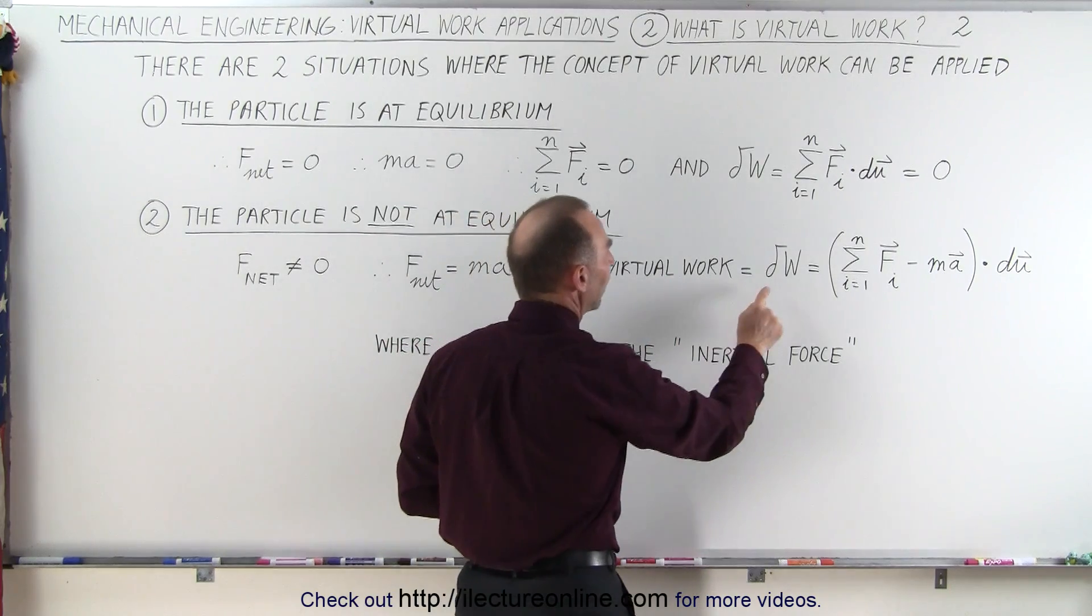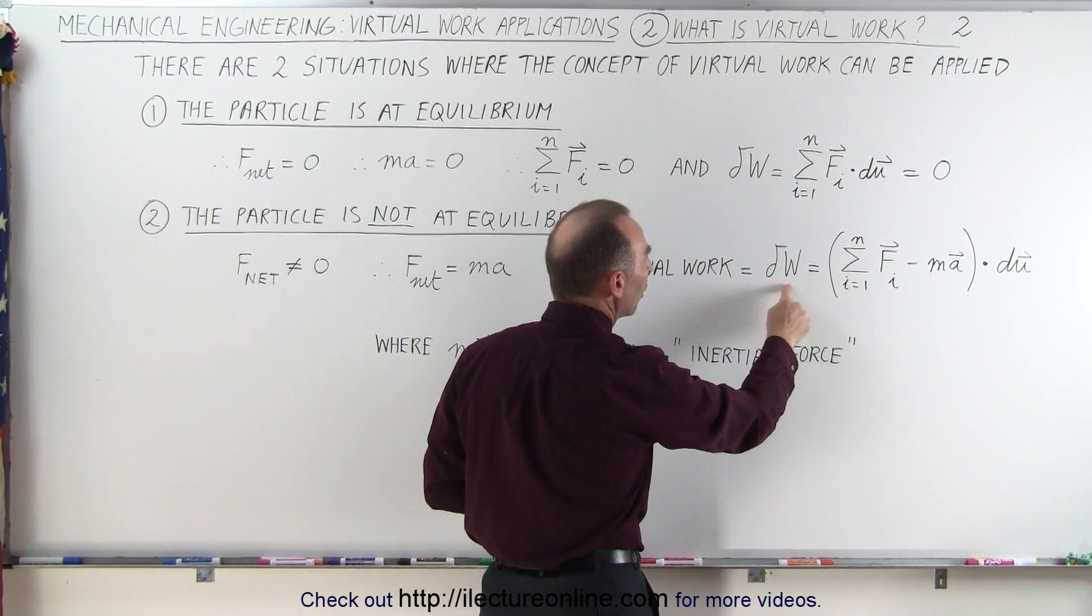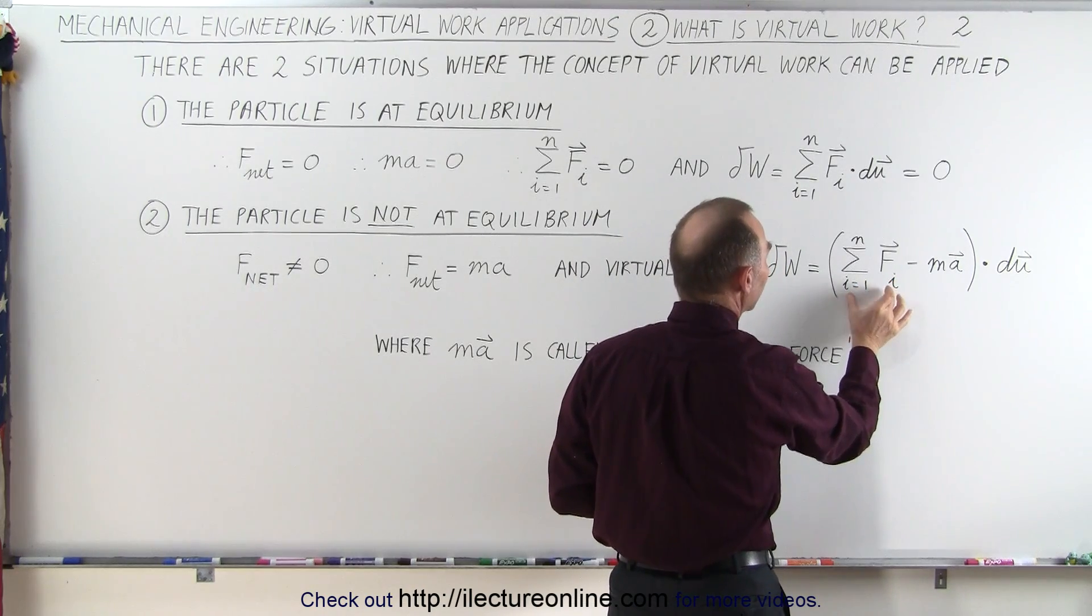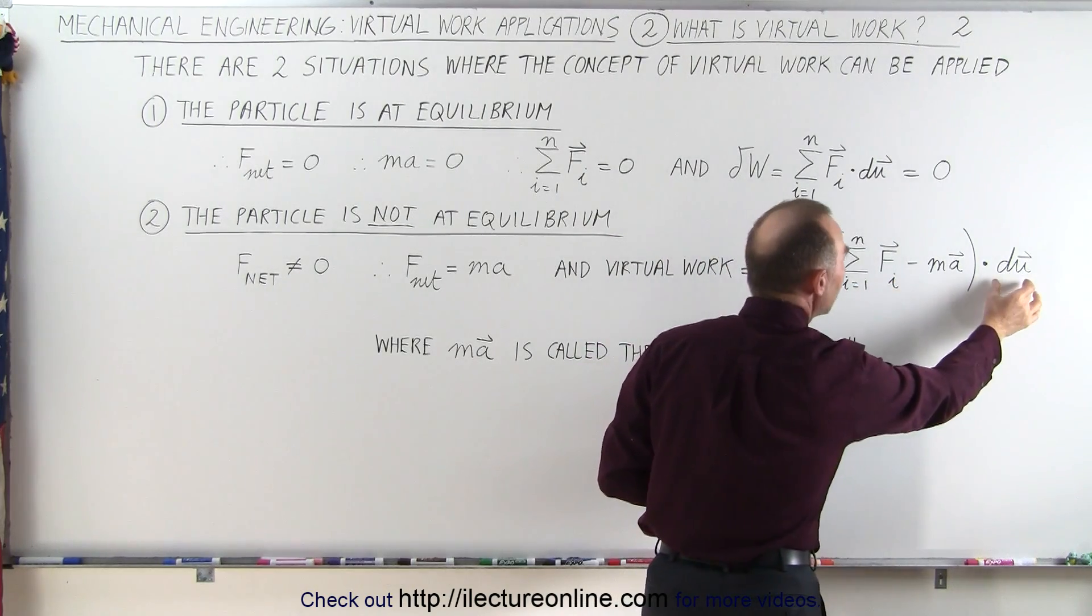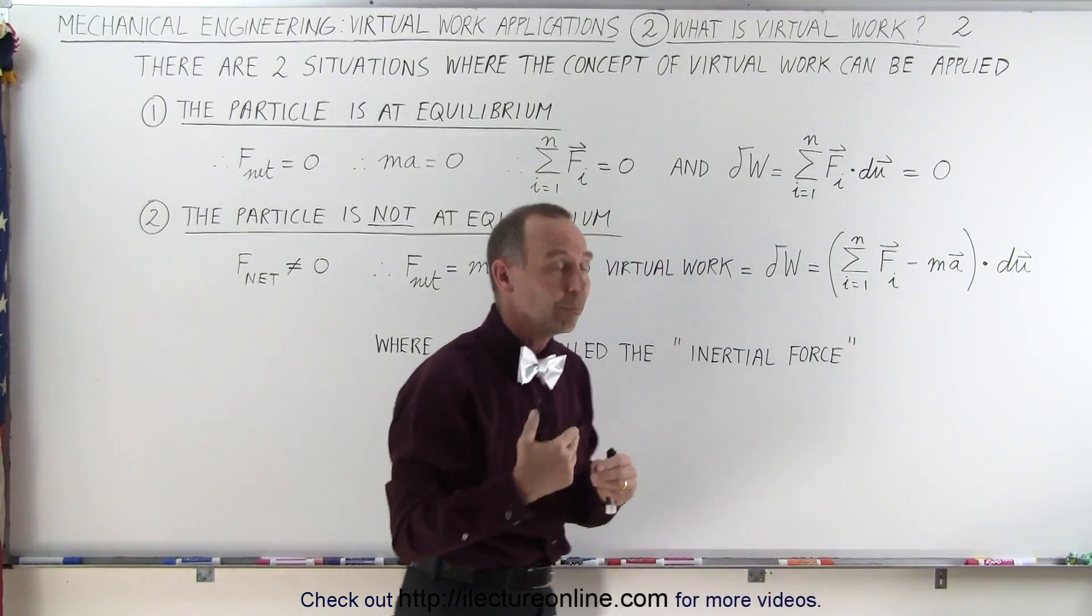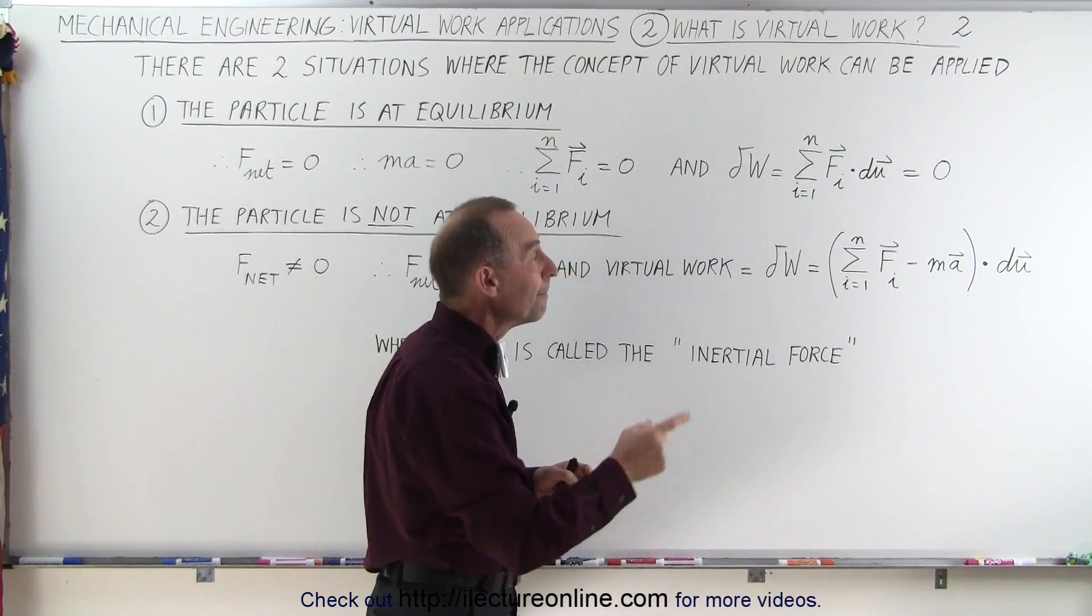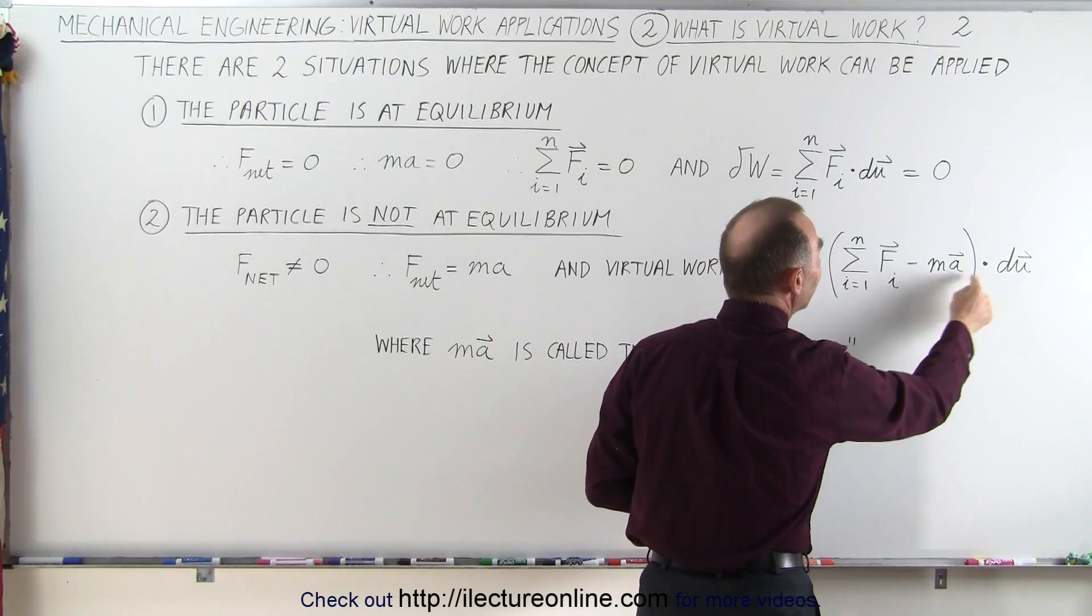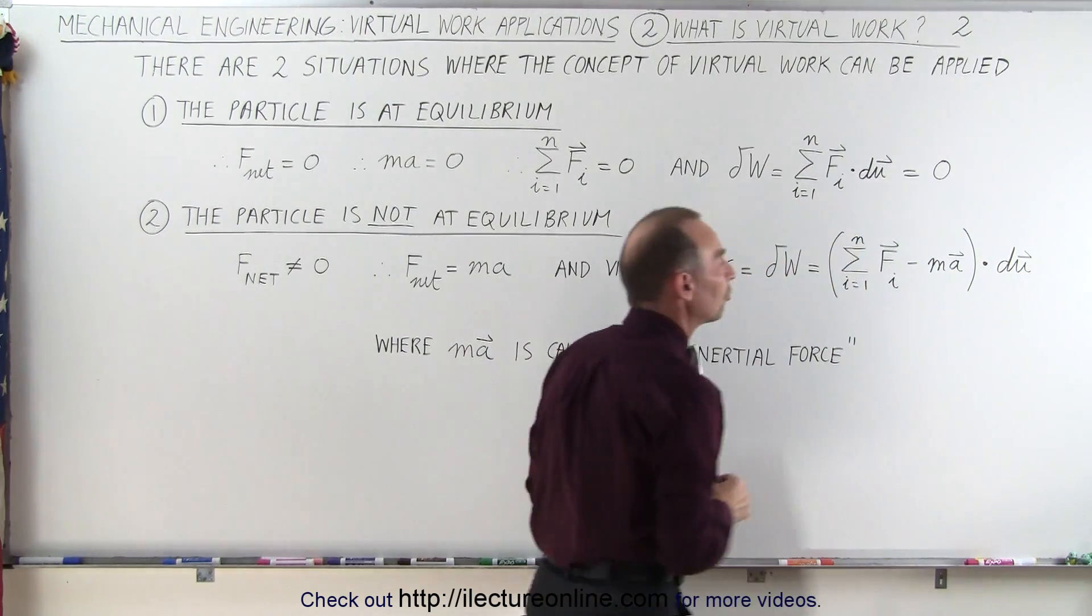The virtual work can now be defined as being equal to delta w, which is equal to the sum of all the forces acting on the particle times the small imaginary virtual distance of displacement, delta u, minus this term, m times a, times the small imaginary displacement as well.